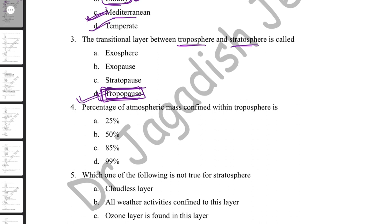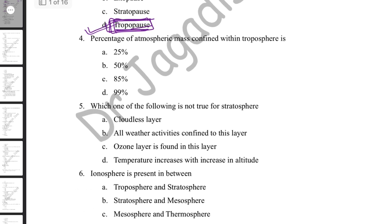The percentage of total atmospheric mass confined within the troposphere is 85%. Combined, the troposphere and stratosphere together contain 99% of total atmospheric mass.